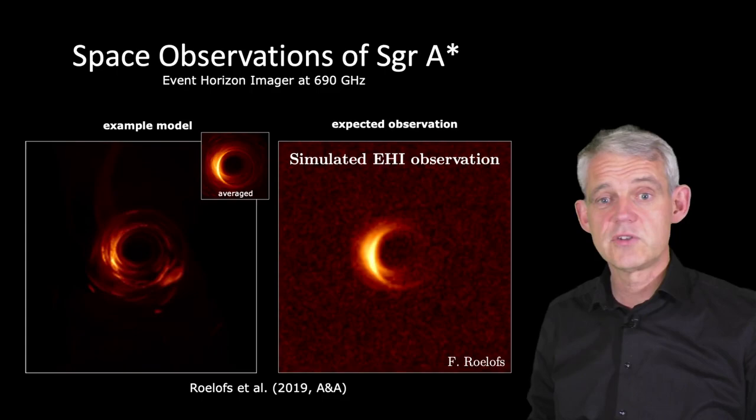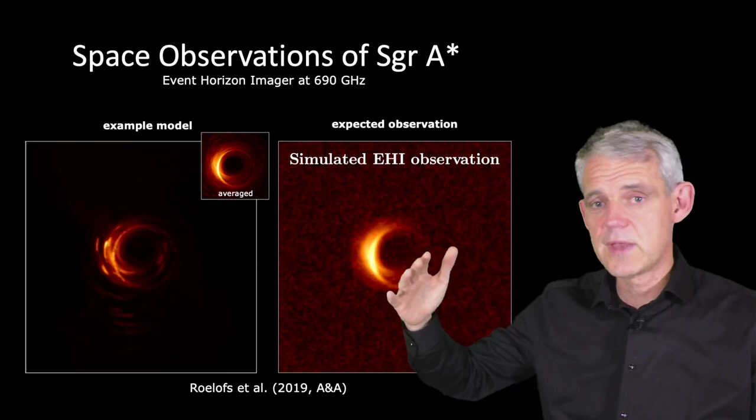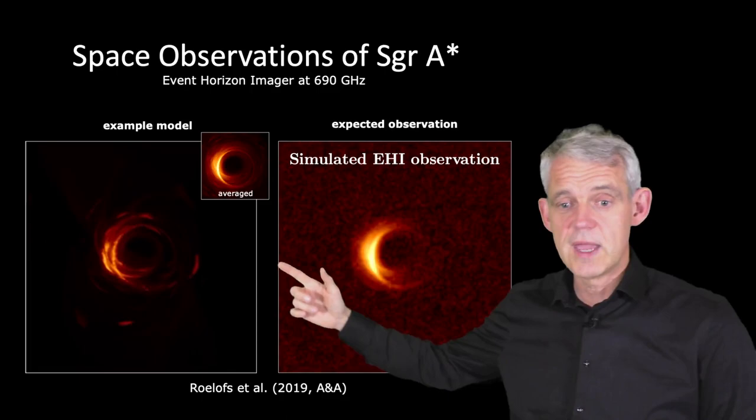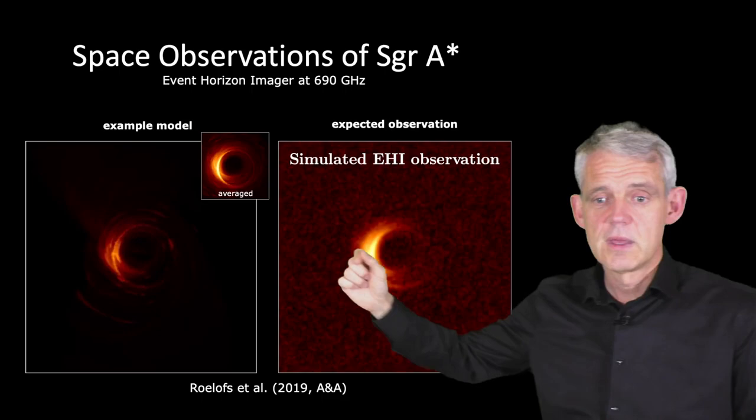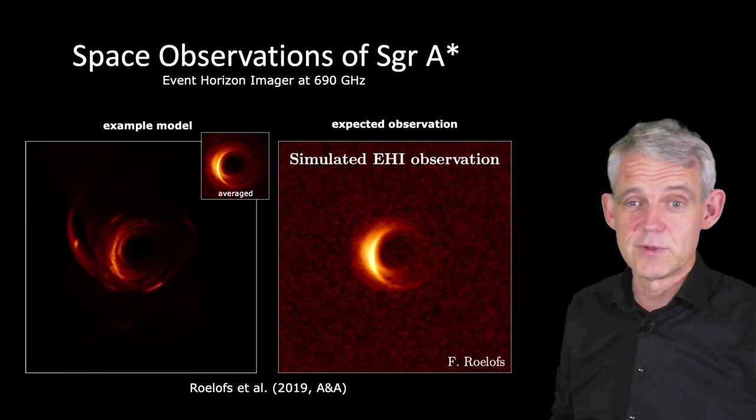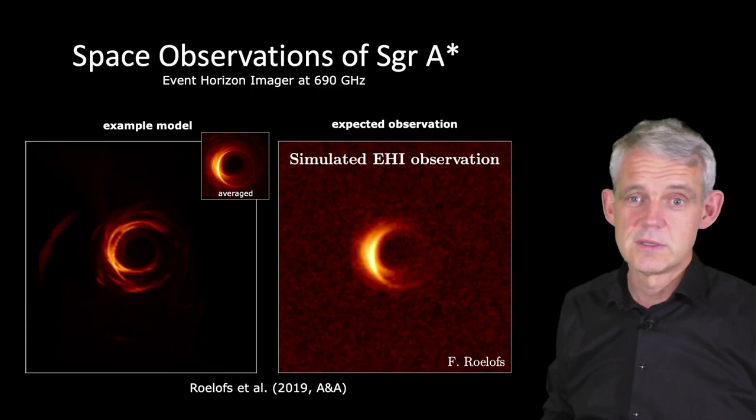At very high frequencies — near terahertz, here 500-600 gigahertz — you see optically thin emission, highly turbulent, in this case for Sagittarius A*. But if you average over a longer time scale, you get a very smooth image that shows the GR features. Then you can reproduce this with your simulated VLBI array in space and recover really the fine structure of the event horizon and the shadow.